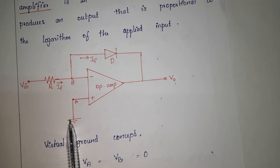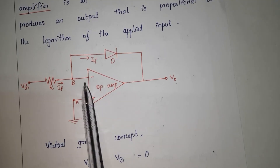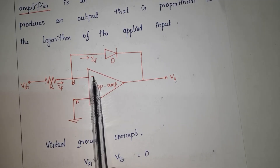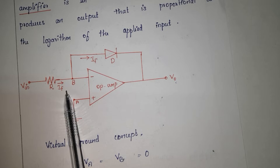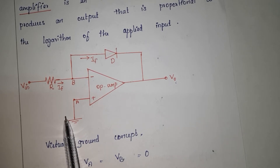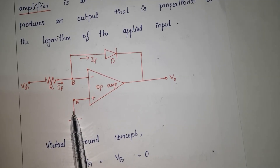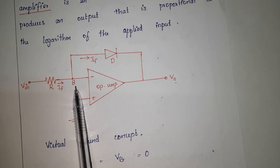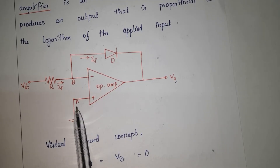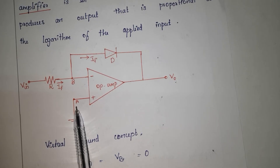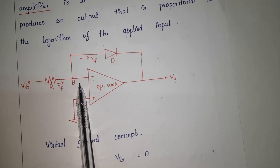According to the virtual short concept, the voltage at the inverting input terminal of the op-amp will be equal to the voltage at its non-inverting input terminal. So the voltage at the inverting input terminal is also 0. By the virtual ground concept, VA = 0 and VB = 0.